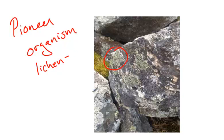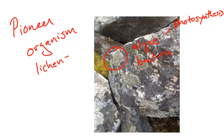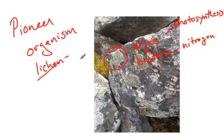Lichen is actually technically two organisms. We have an algae and a bacteria that work together. The algae are able to undergo photosynthesis, and the bacteria are able to provide nitrogen. Since there's no soil, the algae wouldn't be able to get the nitrogen they need to survive, and without being autotrophs, the bacteria would not be able to undergo photosynthesis to get food. So these two organisms work together in what we know as lichens.